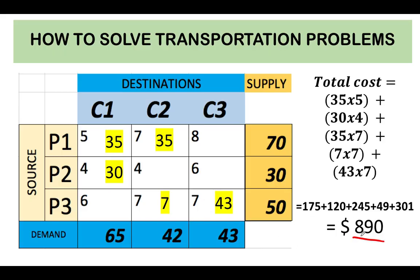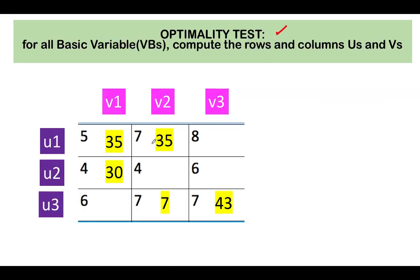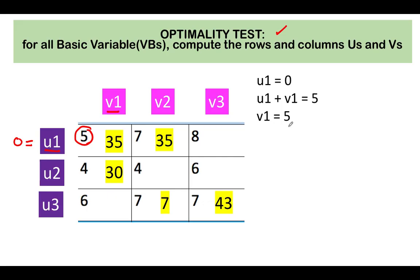We do not know yet if this is the optimal solution — we do not know if we can find a lower cost by rearranging this initial allocation. So we now move to the optimality test. We call the rows the u-variables and the columns the v-variables. We start by assigning u₁ = 0. Then, since the occupied cell at row 1, column 1 has cost 5, we use u₁ + v₁ = 5, which gives v₁ = 5.